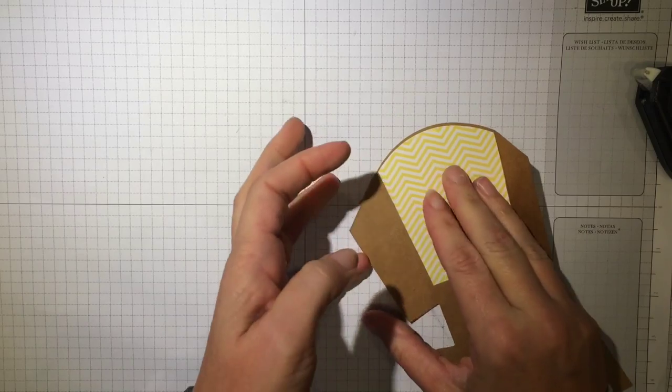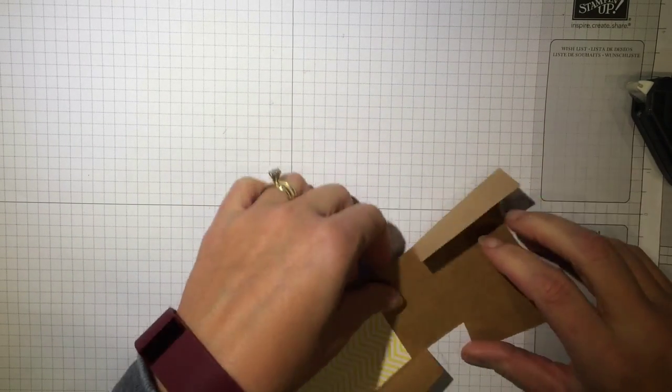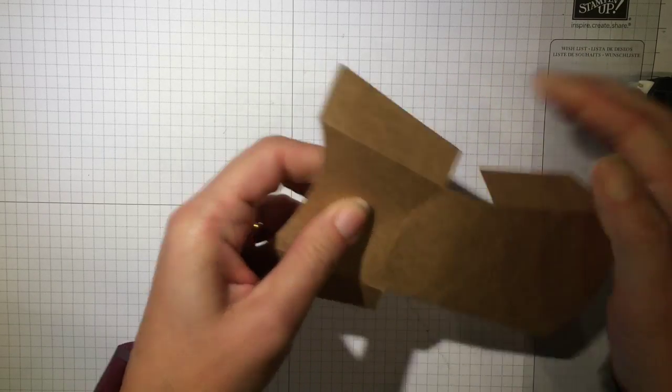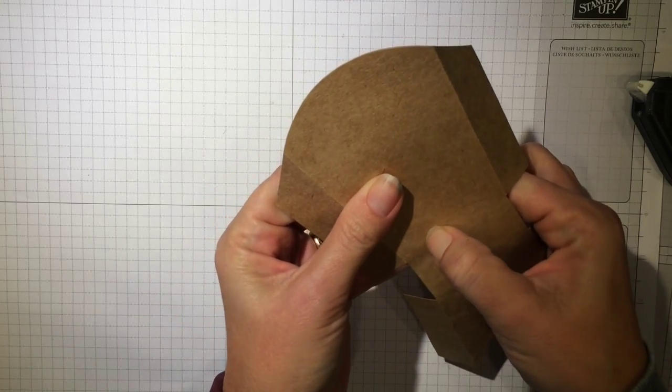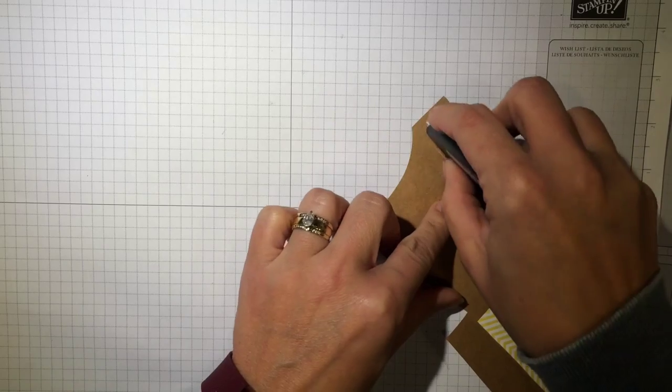Now you need to crease all of your fold lines. If you run your fingernail along these rounded score lines, it seems to help a little bit better with putting those together.